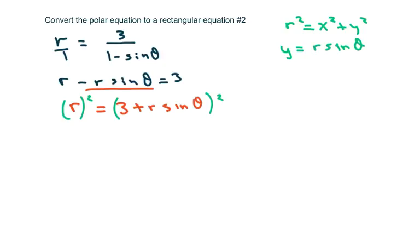So basically, we're going to get x squared plus y squared equals 3 plus y squared. Now let's go ahead and expand this. And you get x squared plus y squared equals 9 plus 6y plus y squared.